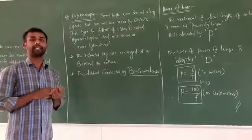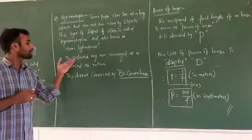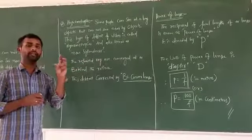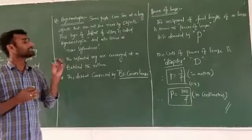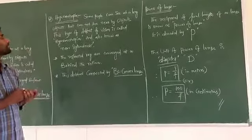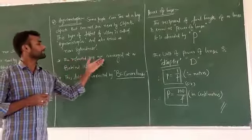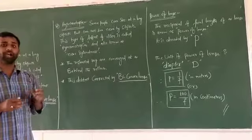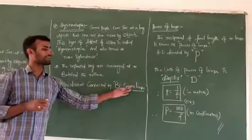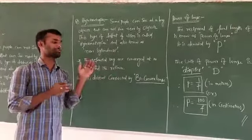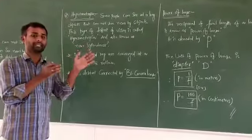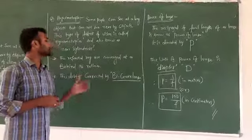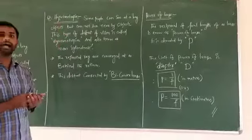In hypermetropia, the refracted rays converge behind the retina instead of on it. This is the defect of the eye known as hypermetropia — the reflected rays are converging behind the retina. To reduce hypermetropia, a convex lens is used in front of the eye.